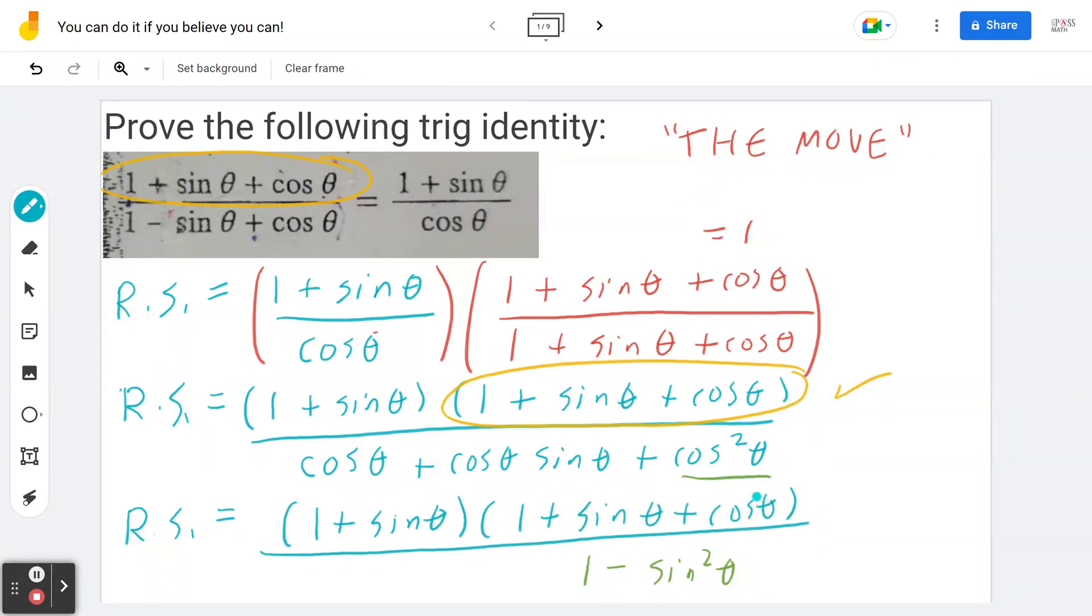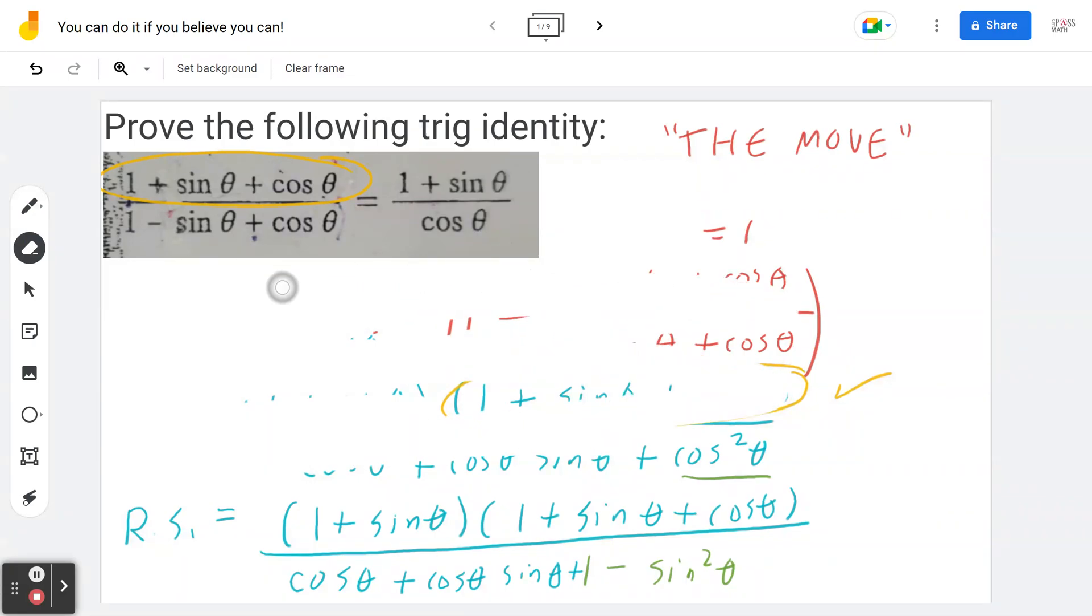Now if you keep going, remember our goal is to factor. So to factor what I need to do is to recognize, if you look at the denominator I can factor this and there's a common factor. Again if you look at this carefully, my goal is to factor 1 plus sin theta which I will in about two steps.